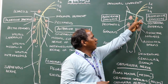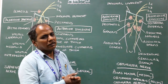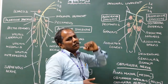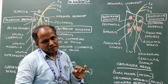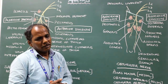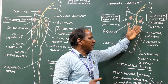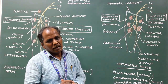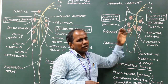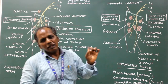In the thigh it divides into anterior and posterior divisions. The anterior division gives muscular branches to pectineus, gracilis, and adductor longus. The posterior division gives muscular branches to obturator externus, adductor magnus, and adductor brevis. Note that adductor brevis may be supplied by a branch from either the anterior division or the posterior division.